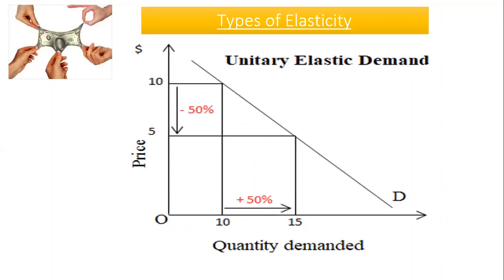The third type is unitary elastic demand — a demand relationship where the percentage change in quantity demanded equals the percentage change in price in absolute value. For example, a 50% decrease in price leads to a 50% increase in quantity demanded. In this case we have unitary elastic demand, and the price elasticity of demand equals one.